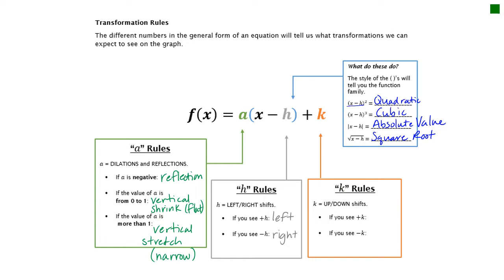The k value is exactly what it looks like. If you see a plus k value — a positive number — that's going to shift your graph up. And if you see a minus k, it's going to shift your graph down.